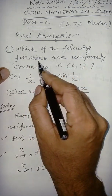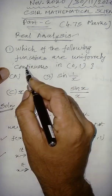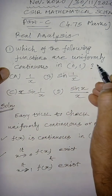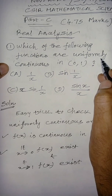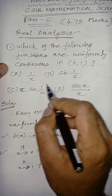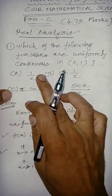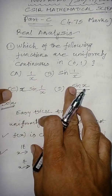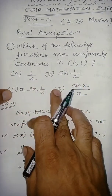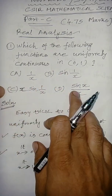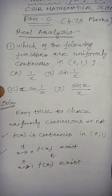Which of the following functions are uniformly continuous in the open interval (0,1)? Four options are given — four functions — and we have to check whether each one is uniformly continuous or not.